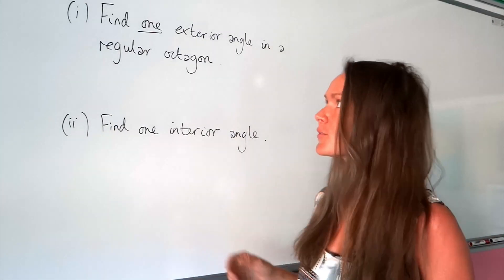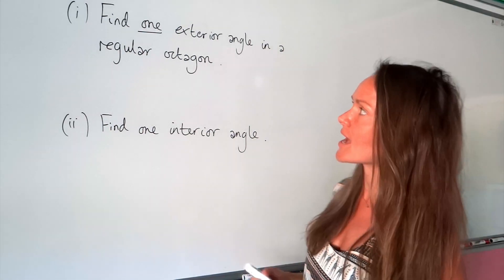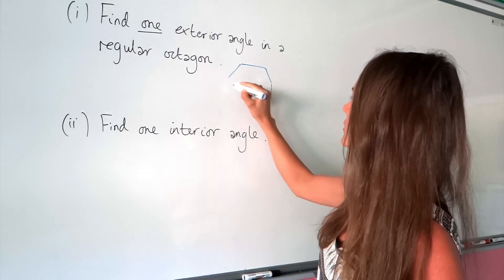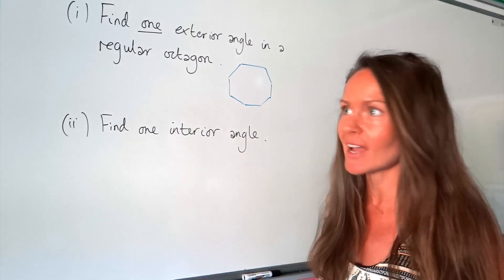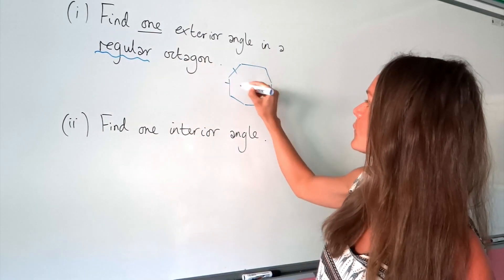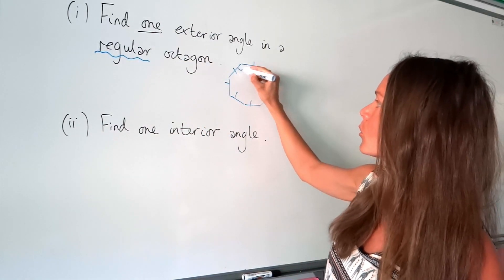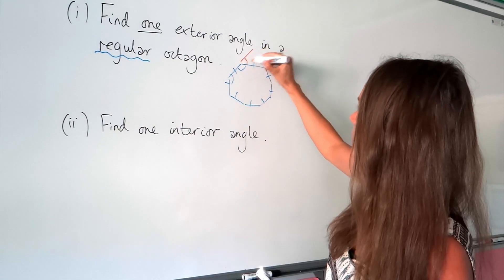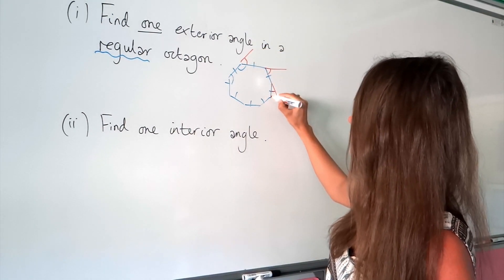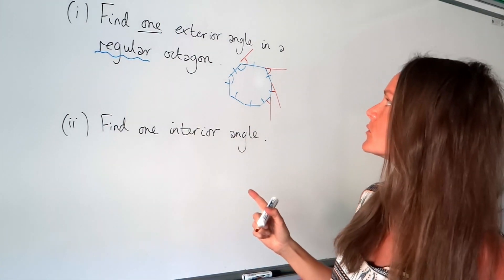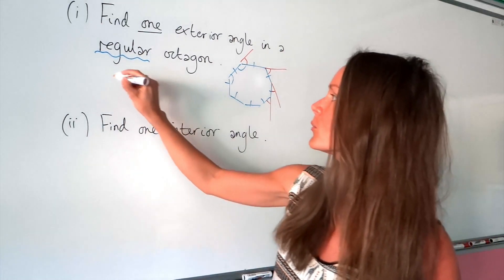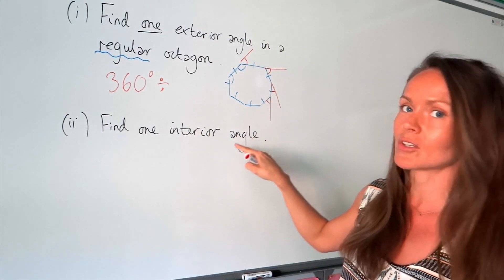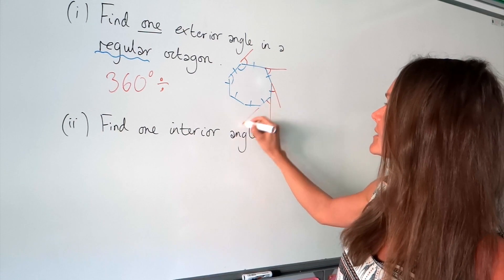So this time there's no diagram, but that's fine. It says find one exterior angle in a regular octagon. An octagon is an eight-sided shape. I'm just going to do a little sketch here so you can see what's going on — it doesn't need to be accurate. And remember, it's regular, so all of the lengths are equal in size, all of the angles are equal in size, and all of the exterior angles — those ones outside the shape — always add up to 360.